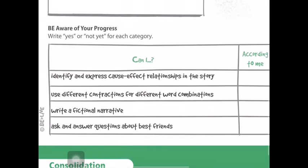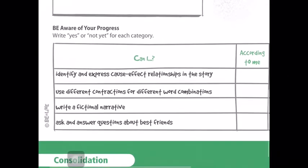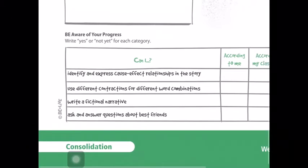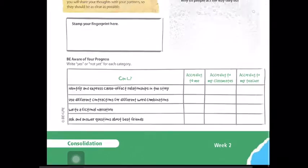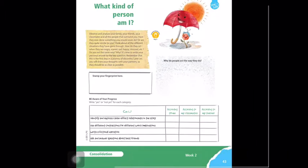And in the end you just have to check the abilities that you have. Can I identify and express cause-effect relationship in the story? Use different constructions for different world combinations? Write a fictional narrative? Ask and answer questions about best friends? This is what you have to do.